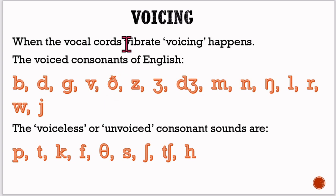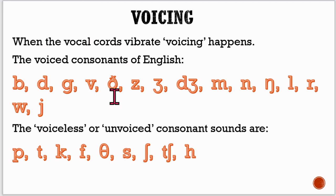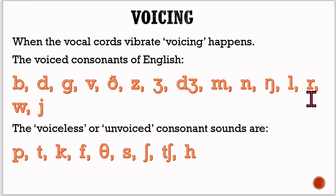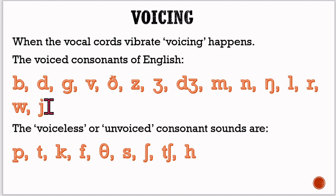Voicing happens when the vocal chords vibrate. The voiced consonants of English are B, D, G, V, the voiced th, Z, the zh sound, J, M, N, the ng sound, L, R, and the two semi-vowels which are difficult to pronounce individually — we will look at them later.